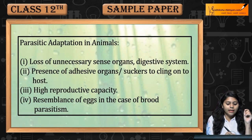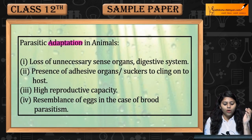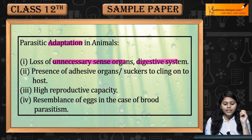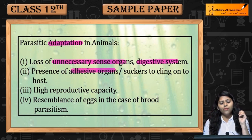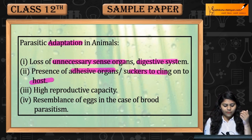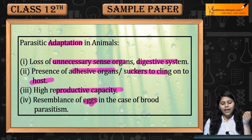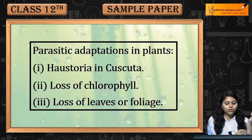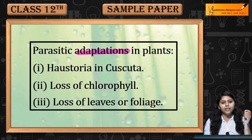Parasitic adaptations include: loss of unnecessary sense organs and digestive system; presence of adhesive organs like suckers to cling onto the host; high reproductive capacity; and resemblance of eggs in the case of brood parasitism.